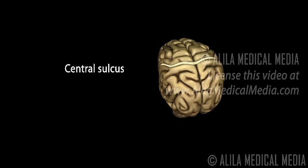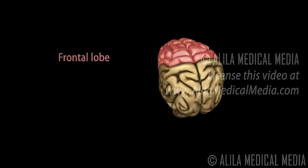A major landmark is the central sulcus. The cerebrum has four major lobes. The frontal lobe is situated anterior to the central sulcus and is associated mainly with voluntary motor functions, planning, motivation, emotion, and social judgment. Posterior to the central sulcus is the parietal lobe.